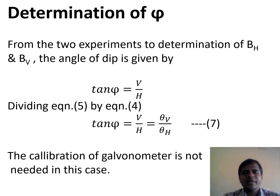To determine the value of psi, that is the angle of dip, the values of BH and BV are used. It is given by tan psi equals V upon H, and this can be obtained by dividing equation 5 by equation 4. That is, tan psi equals theta V upon theta H, and this angle is called psi or the angle of dip. Let this be equation 7.